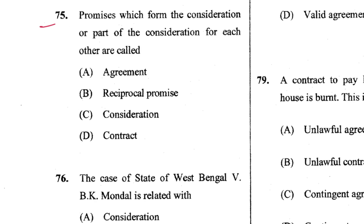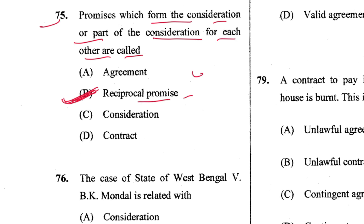Question 75: Promises which form the consideration or part of the consideration for each other are called reciprocal promises. B is the answer. This is mentioned in Section 2(f) of the Contract Act.